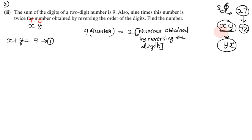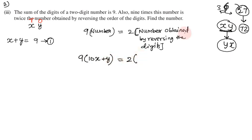Now, the number xy — it doesn't just mean x times y. The place value of x is 10, so the number is 10x plus y. Similarly, reversing the digit gives yx, where y is in the tens place, so the reversed number is 10y plus x.